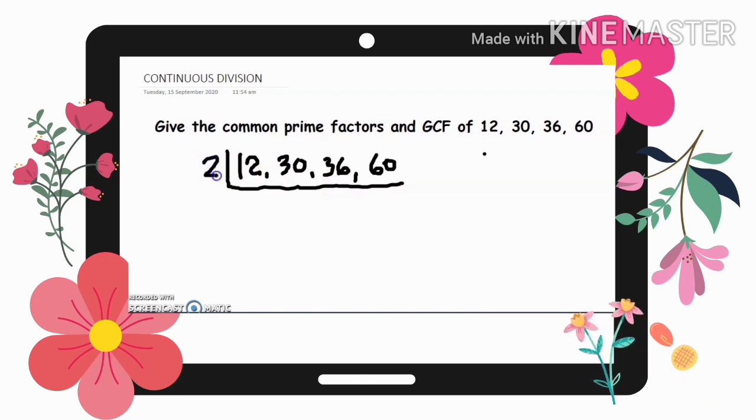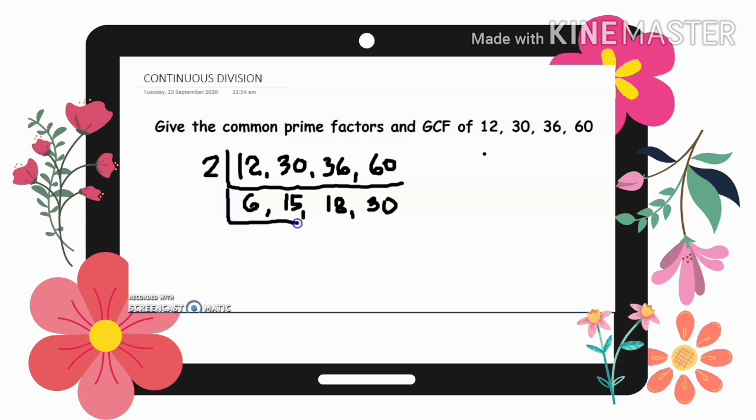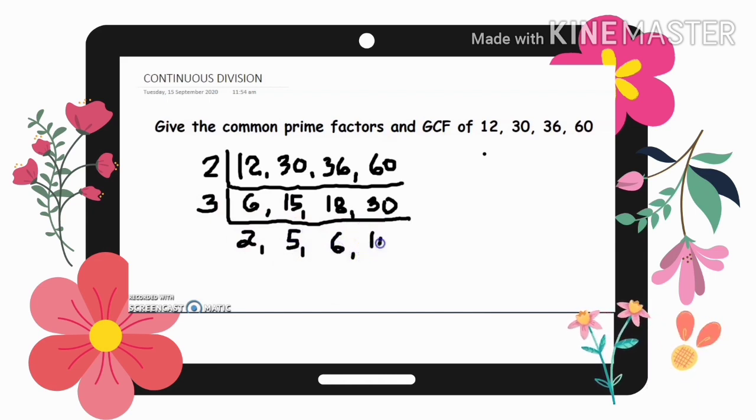12 divided by 2 is 6. 30 divided by 2 is 15. 36 divided by 2 is 18. And 60 divided by 2 is 30. Okay. So, think again of a number na pwede tayo, or a prime number na pwede i-divide sa 6, 15, 18, and 30. So, i-review nyo yung inyong divisibility rule. So, 6, 15, 18, and 30 are divisible by 3. So, 6 divided by 3 is 2. 15 divided by 3 is 5. 18 divided by 3 is 6. And 30 divided by 3 is 10.